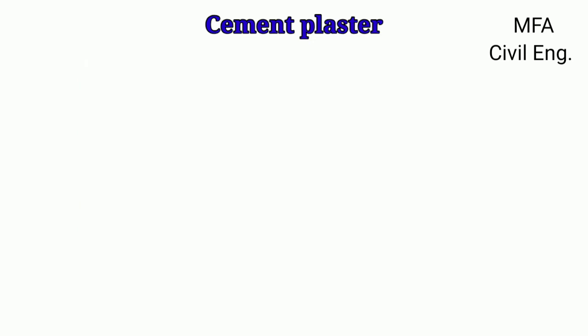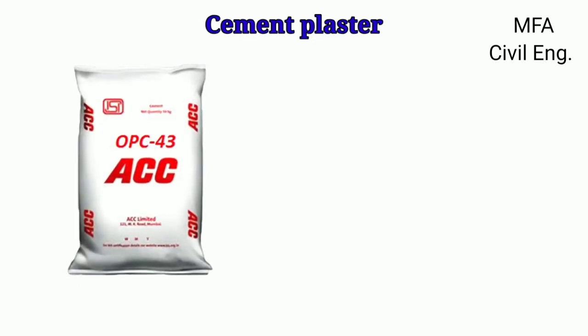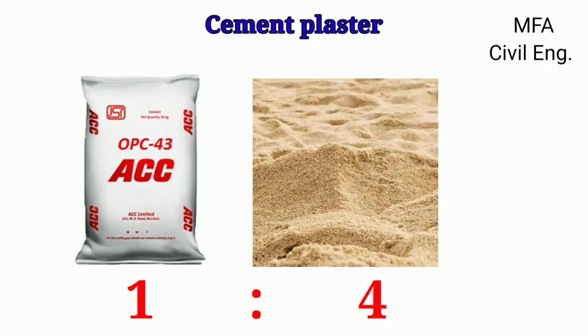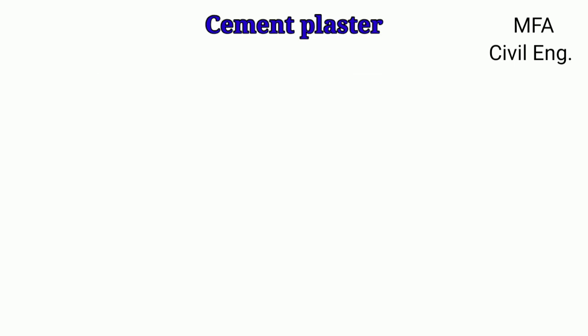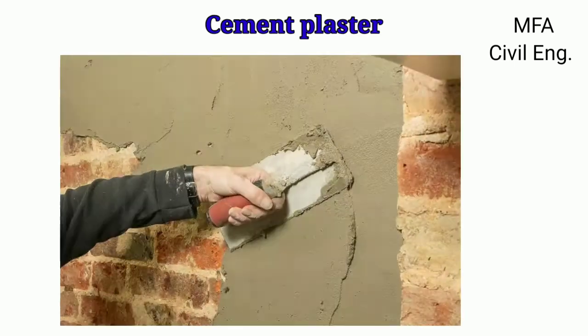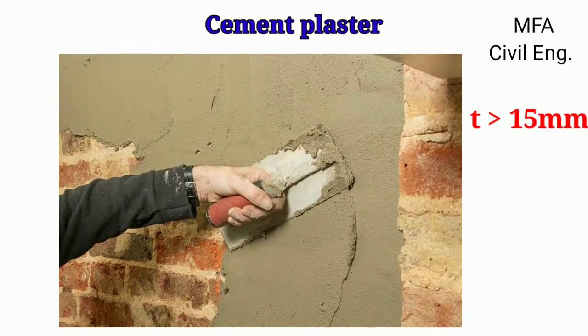It consists of the usual proportion of cement and sand as 1:4, that is one part cement and four parts sand, though higher proportions can also be used depending on the nature of work. When the thickness of plaster is more than 15 mm or when a finer finish is required, cement plaster is applied in two coats.